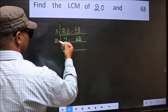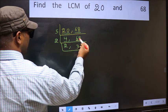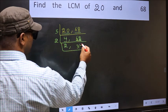First number 6. When do we get 6 in 2 table? 2 threes 6. The other number 8. When do we get 8 in 2 table? 2 fours 8.